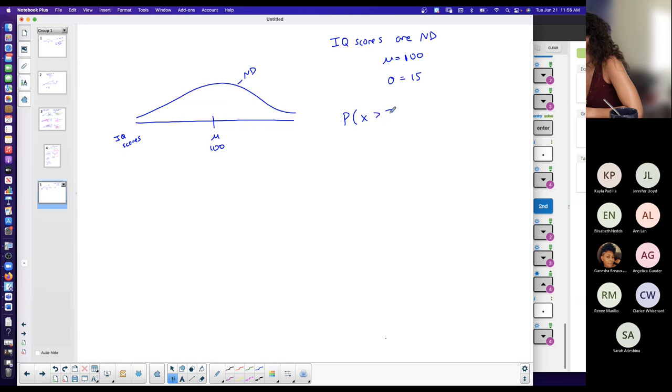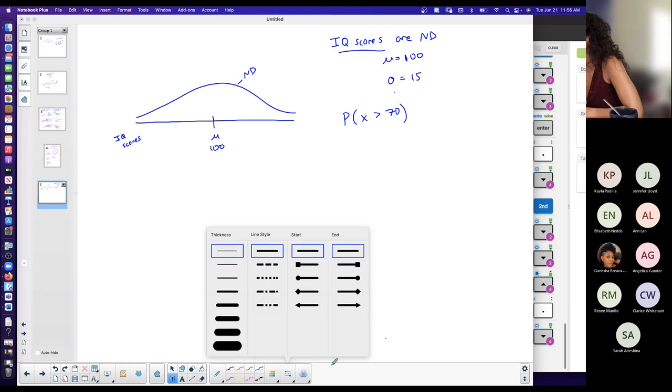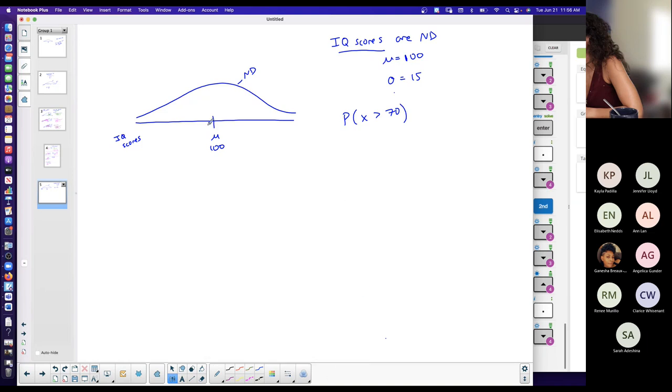So what you have might look like this. Find the probability that you randomly select one IQ score, and it's greater than 70. So 70, and you're not going to have the figure for this. 70 is to the left of 100. And if I want probability that it's greater than that, then I'm looking for area to the right.